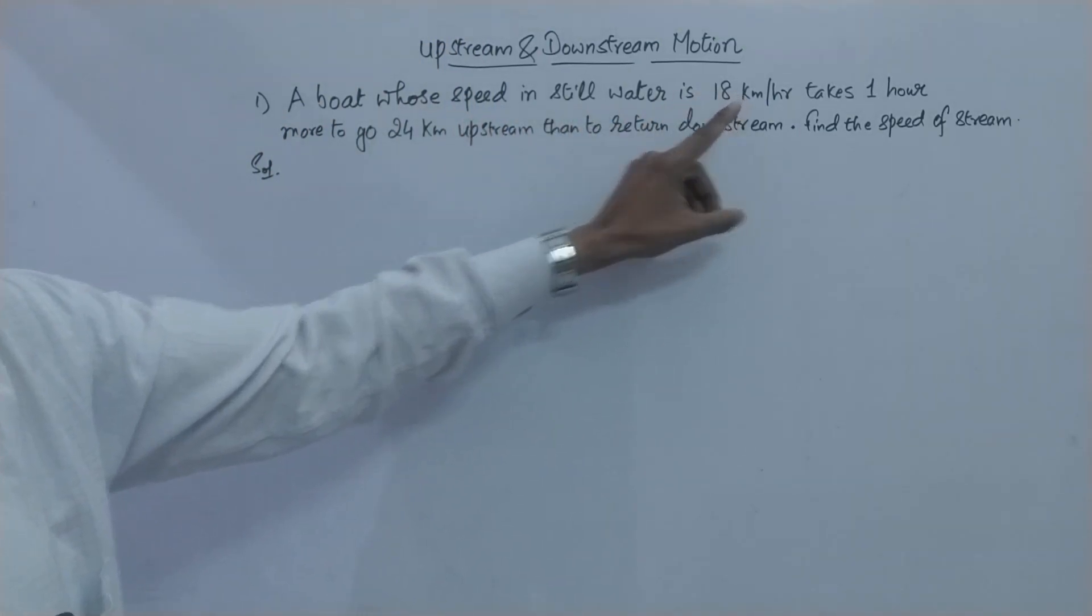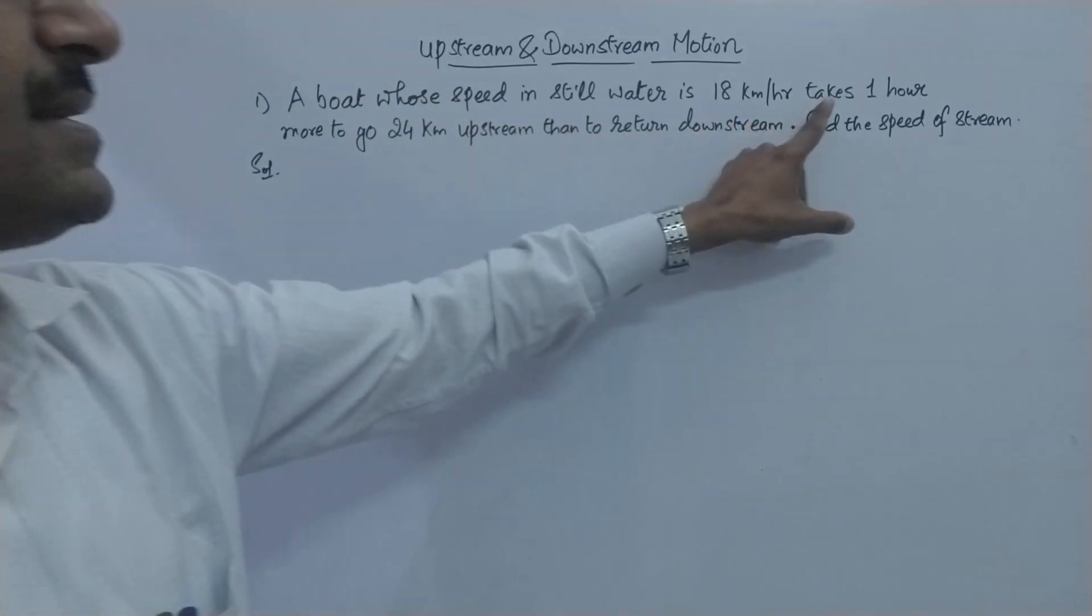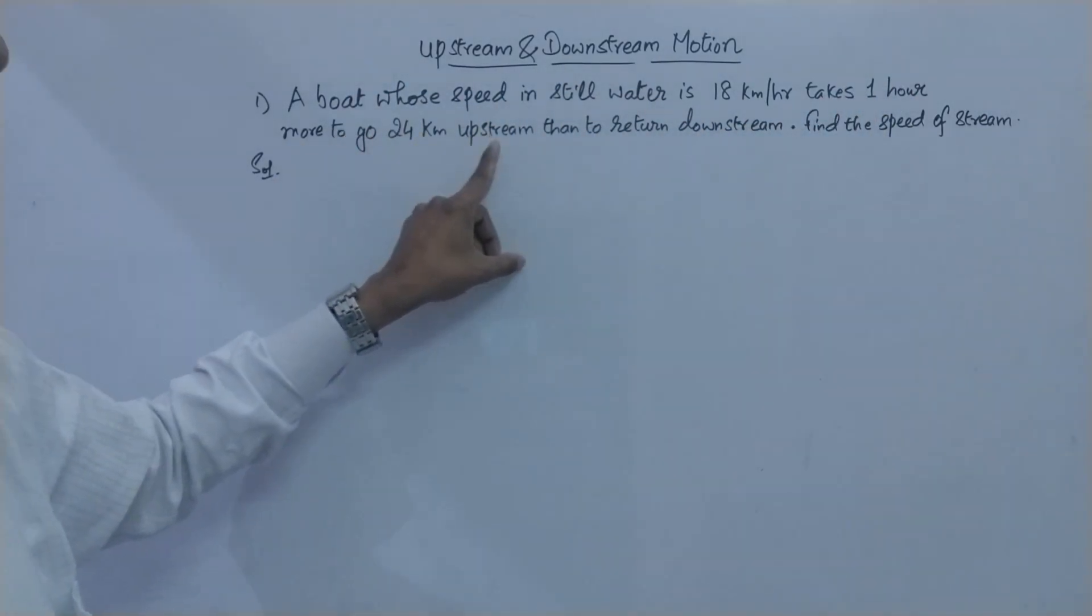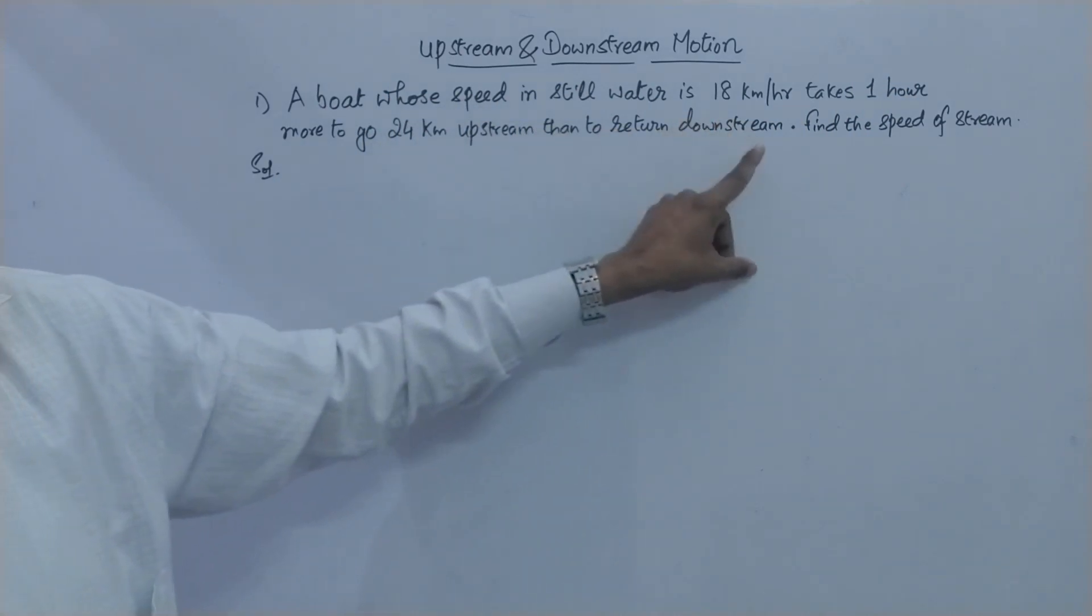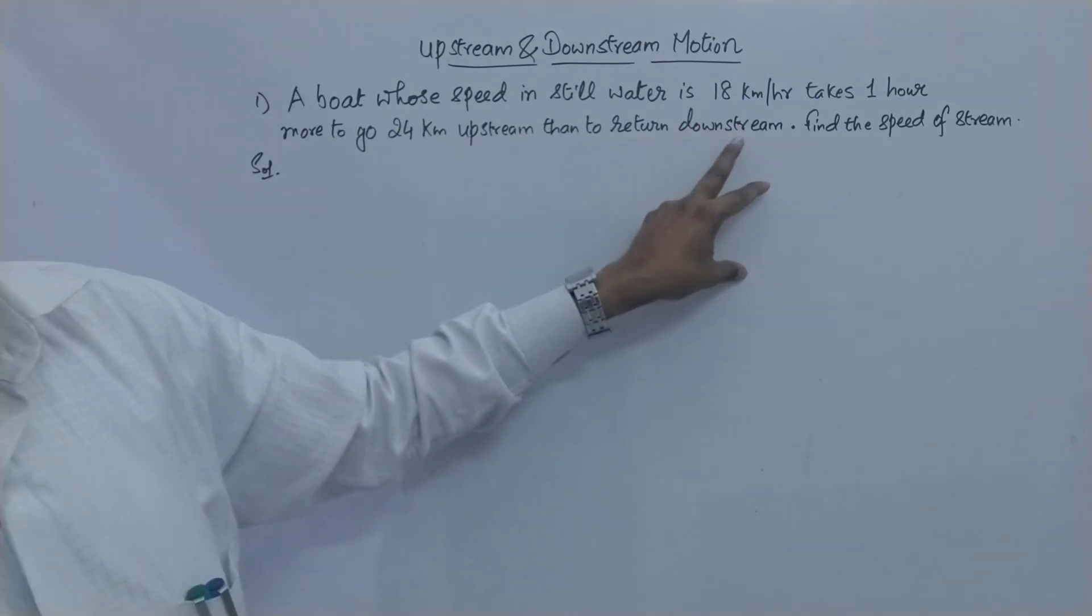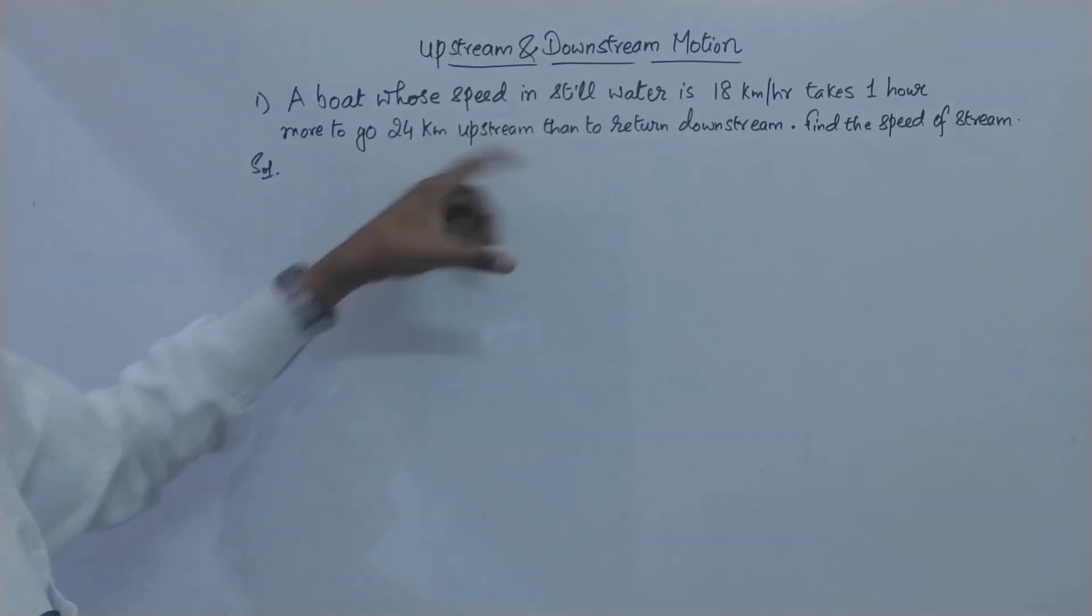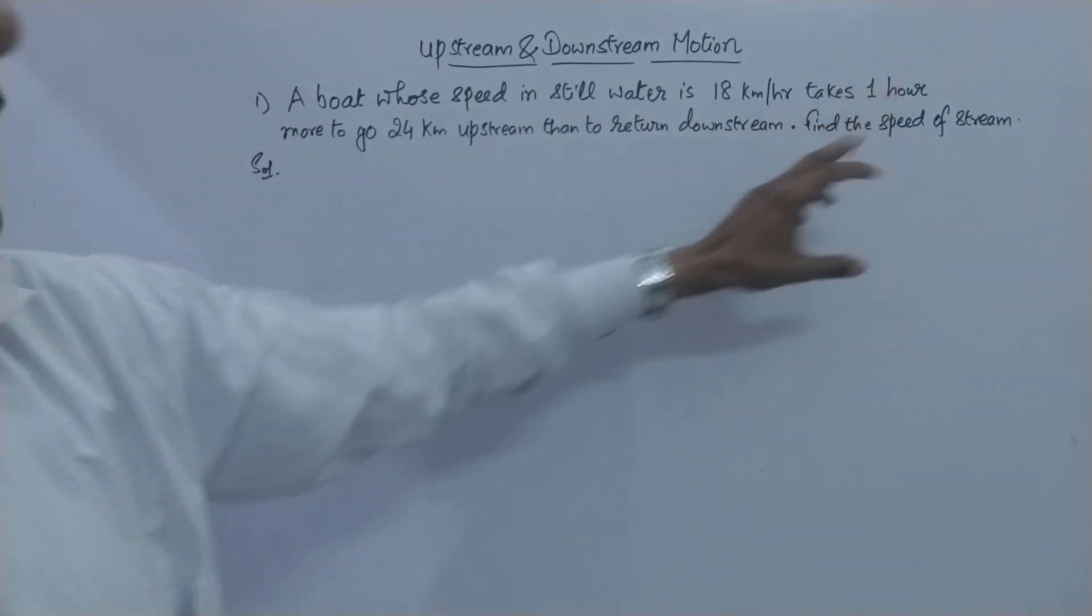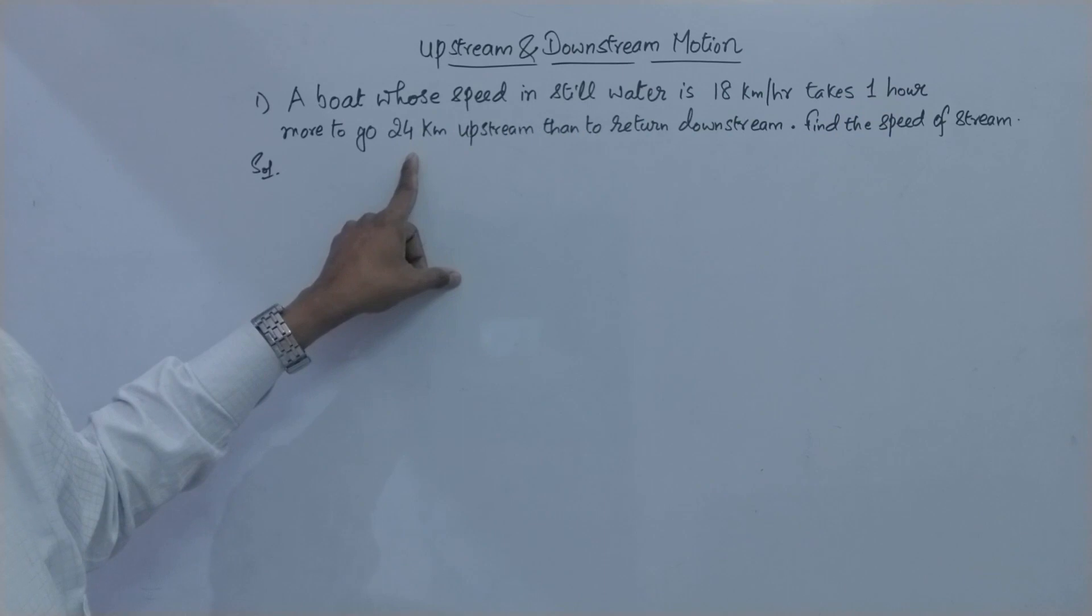So the first problem goes like this: there's a boat whose speed in still water is 18 kilometer per hour and that boat takes one hour more to go 24 kilometer upstream than to return downstream. While going it is going upstream and obviously it takes more time while going upstream than to return downstream and the difference between the times of the two motions is given as one hour and the distance is 24 kilometers.